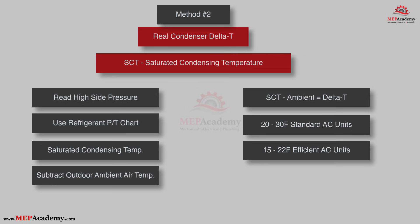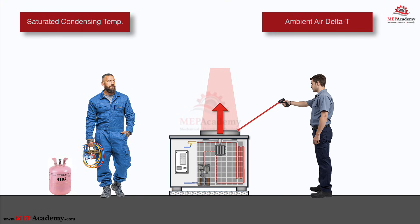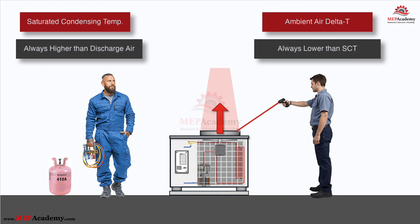So one is fast, one takes a little effort. Which one do you trust? This is where many technicians run into trouble — they try to use the SCT number to estimate airside delta T. But SCT is always higher than the air discharge temperature because the refrigerant is hotter than the air being blown off the unit. The two measurements are related but they're not interchangeable, and substituting one for the other will lead to incorrect conclusions about airflow, coil cleanliness, or charge. Air side delta T does not equal SCT. They are two different measurements serving two different diagnostic purposes.